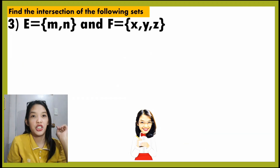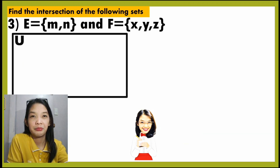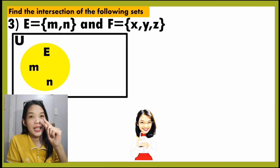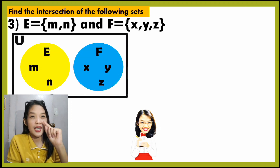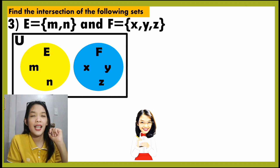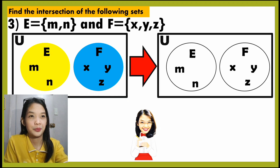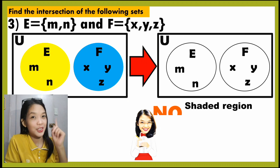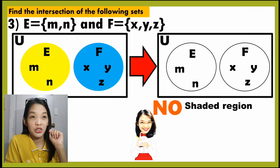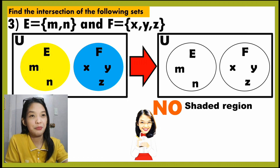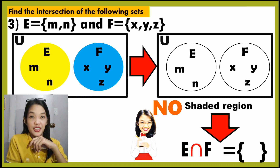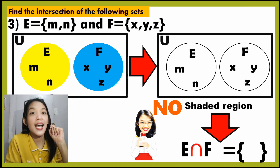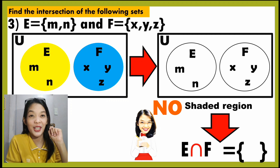Let us illustrate number 3. Set E has the elements M and N, and set F has the elements X, Y, and Z. As you observe, there are no common elements. There is no shaded region, and therefore the intersection of E and F will be an empty set or null set.